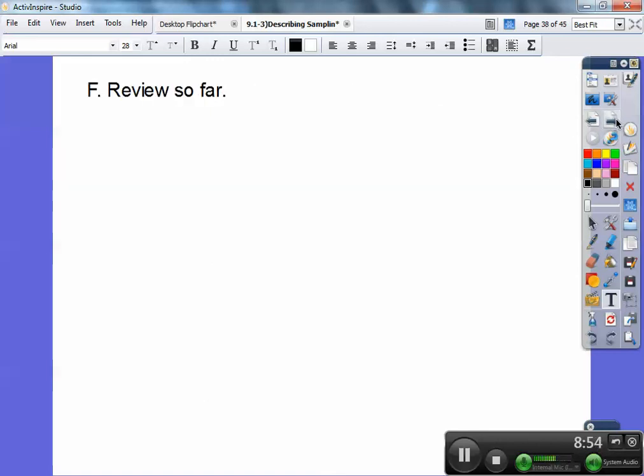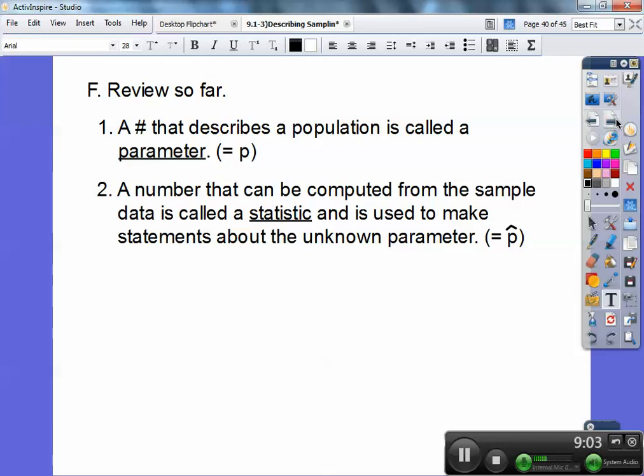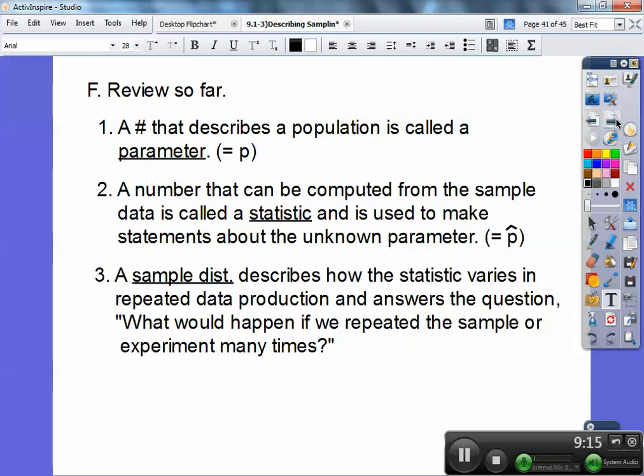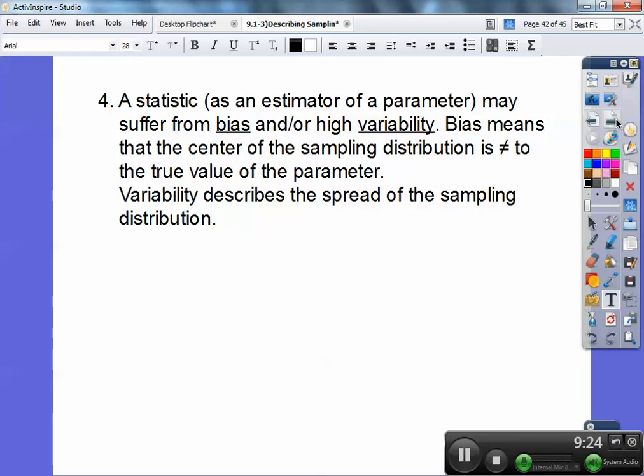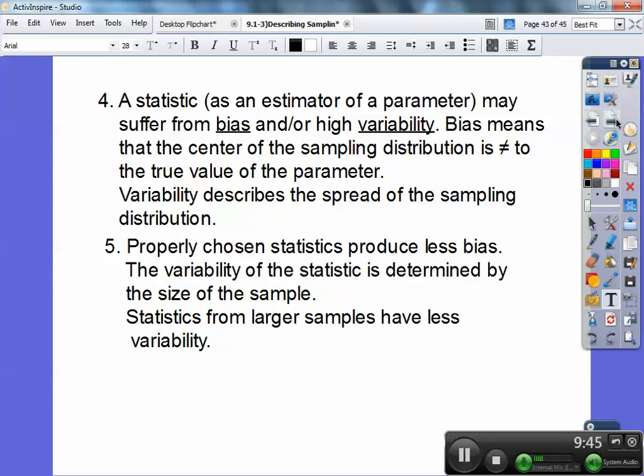Review so far. A number that describes a population is called a parameter, and that equals P. A number that can be computed from the sample data is called a statistic and is used to make statements about the unknown parameter, so that's P hat. A sampling distribution describes how the statistic varies in repeated data productions. A statistic as an estimator of the parameter may suffer from bias and or high variability. Bias means that the center of the sampling distribution is not equal to the true value of the parameter, and variability describes the spread of the sampling distribution. A properly chosen statistic produces less bias. The variability of the statistic is determined by the size of the sample. Statistics from larger samples have less variability.